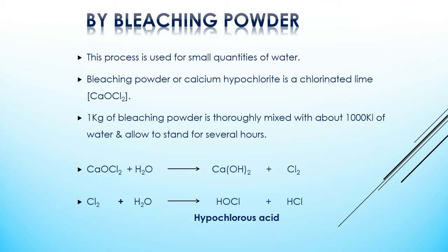Now let's see how this disinfection action takes place. Calcium hypochlorite on hydrolysis produces calcium hydroxide and chlorine. This chlorine again undergoes hydrolysis to produce hypochlorous acid and hydrochloric acid. This hypochlorous acid is a powerful germicide which kills the bacteria. However, only a calculated quantity of bleaching powder should be used to avoid bad taste imparted to the treated water.